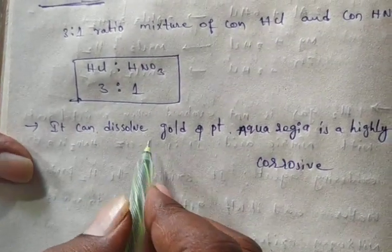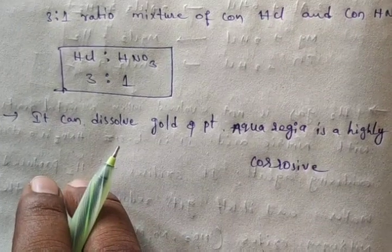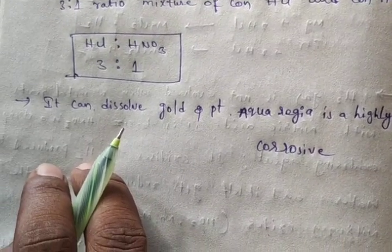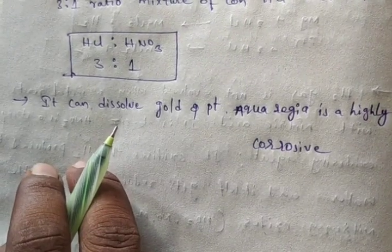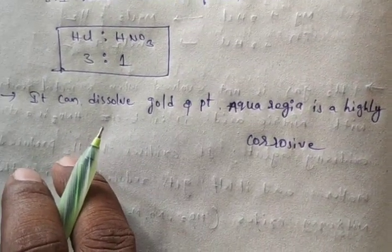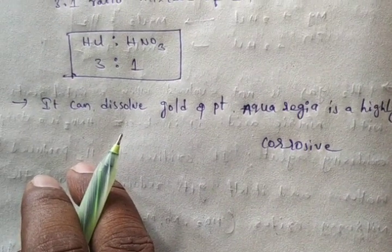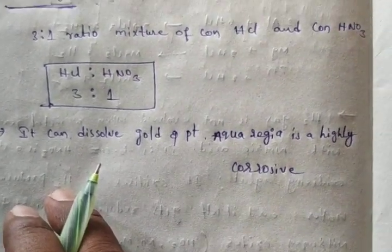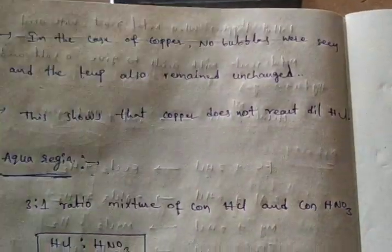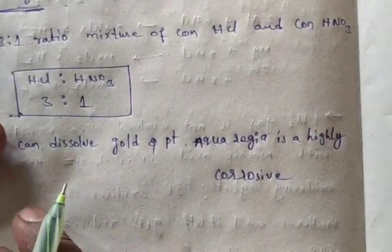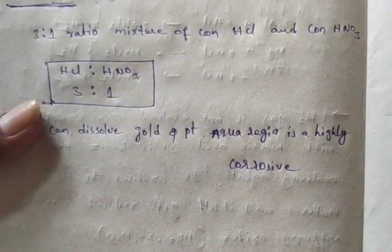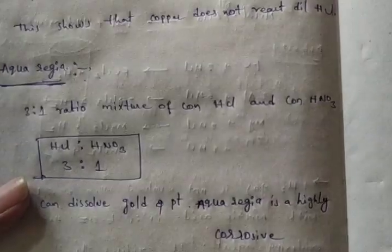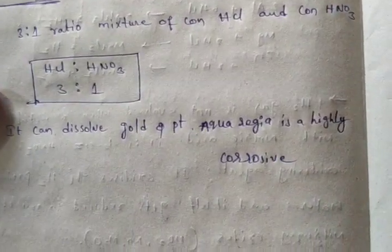Aqua regia is highly corrosive, so gold and platinum can dissolve in it. When metals react with acids, they produce hydrogen gas and corresponding salt. But when metal reacts with HNO3, hydrogen gas is not produced, because HNO3 is a strong oxidizing agent — it oxidizes hydrogen to water. That's why it won't produce hydrogen gas; instead, other nitrogen oxides are formed. Copper does not react with dilute HCl — no bubbles are seen and the temperature remains unchanged. Aqua regia is a 3:1 ratio of concentrated HCl and HNO3, and gold and platinum can be dissolved in it.